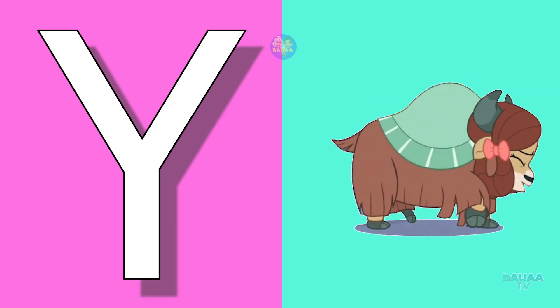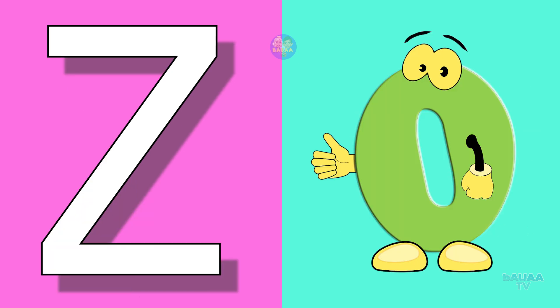Y for yak, yak means yak. Z for zero, zero means sunya.